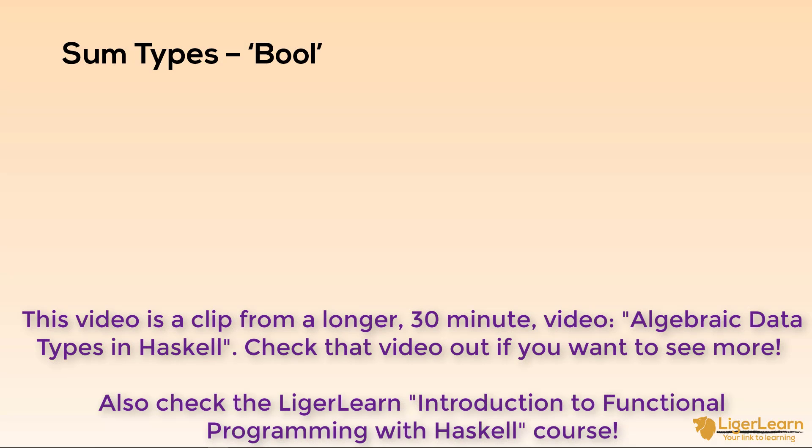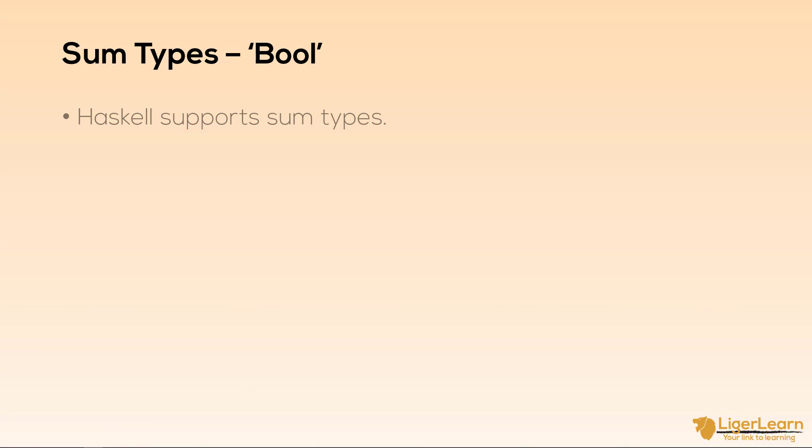In addition to product types, which we have already seen, there are also sum types in Haskell. We'll see why it's called a sum type in a bit. Sum types are sometimes alternatively referred to as a union type because of how they are similar to unions in set theory.